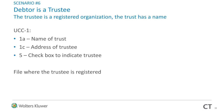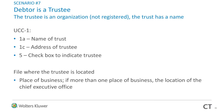Trust scenario six: the debtor is a trustee, the trustee is a registered organization, and the trust has a name. On box 1A, enter the name of the trust. On 1C, the address of the trustee. Check the box. File where the trustee is registered — pretty straightforward. Trust scenario seven: the trustee is an organization that is not registered, and the trust has a name. On box 1A, name of trust. On 1C, address of trustee. Check box 5. File where the trustee is located — place of business, or if more than one location, where they cut the checks.